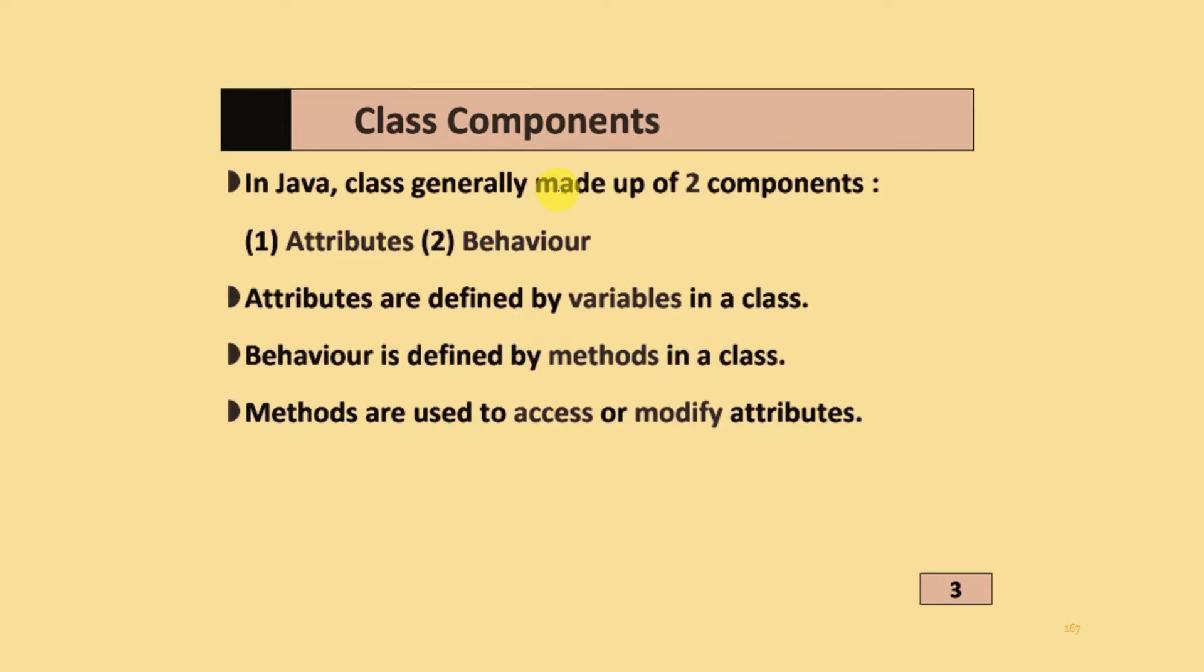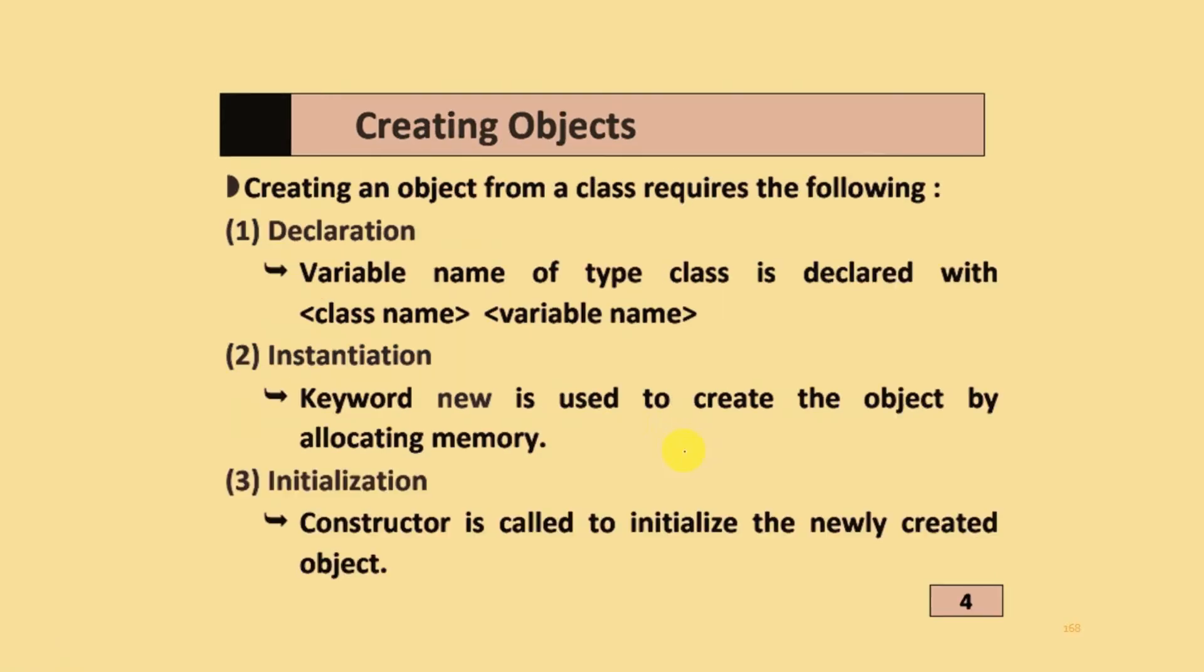Class components are generally made up of two components: attributes and behavior. Attributes are defined using variables. Behaviors can be defined using different methods in the program or class. Methods are used to access or modify attributes.